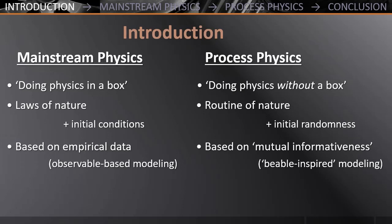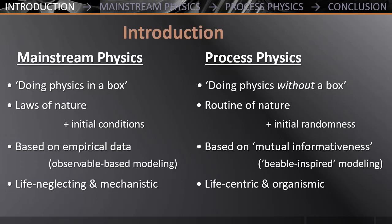Next in line is that mainstream physics typically tries to reduce all of nature to inert bits of matter in motion, whereas process physics treats nature as an integrated web of organismic relations. Finally, because of its belief in reductionism, mainstream physics treats conscious experience as an epiphenomenon, or even as entirely illusory. In process physics, however, subjectivity is a primordial inherent aspect of nature.